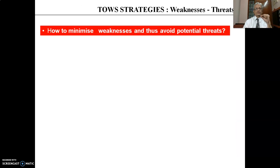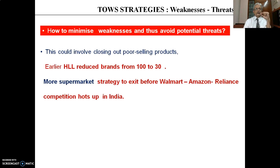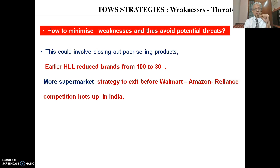The next category is the Weakness-Threat strategy — how exactly to minimize your weaknesses and thus avoid potential threats. This is a very important strategy to follow; otherwise, your competitors will exploit your weaknesses. This could involve closing down poorly selling products or businesses. Hindustan Lever, when facing a lot of competition from local Indian companies, decided to reduce their brands from 100 to 30, as many brands were not doing well and there was a lot of cannibalization. Recently, More Supermarket decided to exit its retailing operation before competition from Walmart, Amazon, and Reliance heated up in India, because the current valuation was good — once competition heats up, valuations come down.